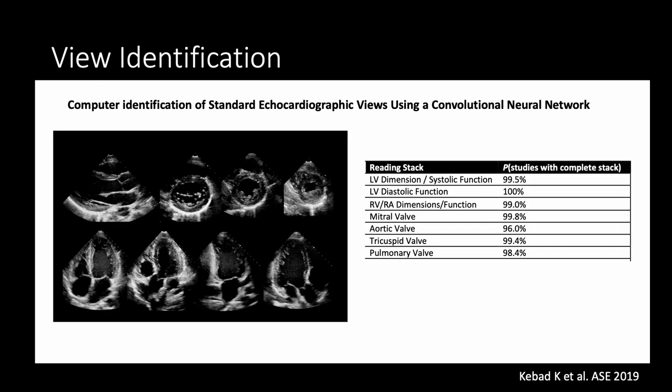Once you can identify the images, you can pick out things you want to group together so you could read in stacks. The computer algorithms can not only identify the images but also stack them to be useful for reading. You could create an LV stack, an LA stack, or pull out all images related to the mitral valve, and the algorithms can do this very well once they know what they're looking for.